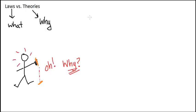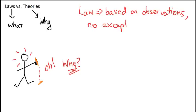Now we want to know why. So if we talk about what is happening, we're talking about the law of gravity. This is based on an observation. It happens every single time, no exceptions. And so this is why we call it a law.